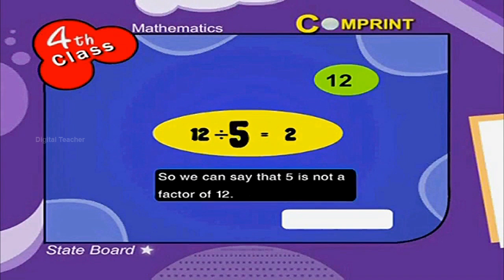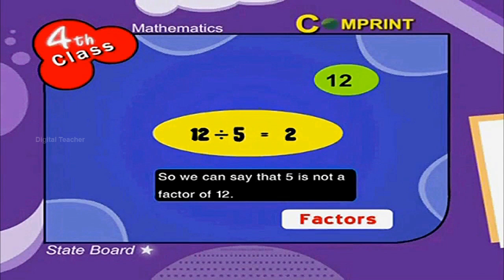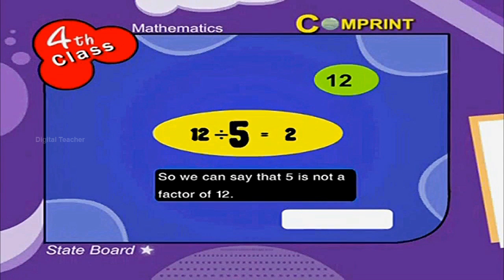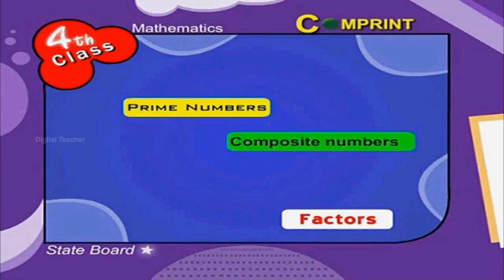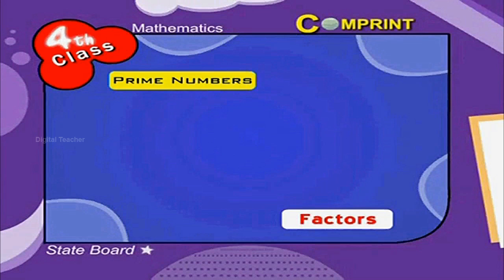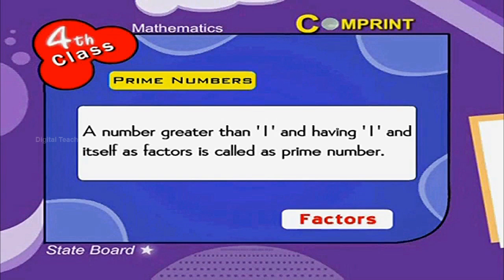Prime numbers and composite numbers. Prime numbers: A number greater than 1 and having 1 and itself as factors is called as prime number.